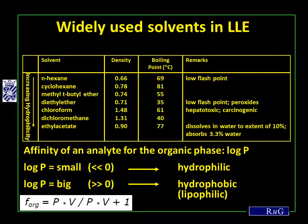Finally, the relation between the distribution coefficient and the phase ratio discussed earlier can be used to calculate the fraction of a given molecule that will be found in the organic phase. This makes liquid-liquid extraction a method that is fairly easy to understand, predictable, and where extraction yields can, to a certain extent, be calculated a priori.